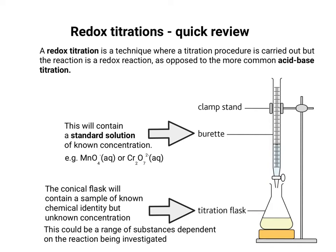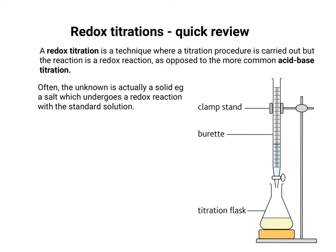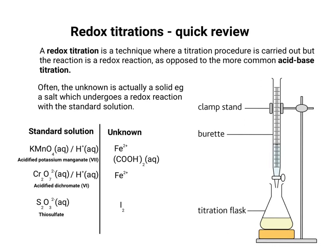The unknown could be a range of substances, depending on the reaction being investigated. In many cases the unknown is a solid that has to be dissolved to make a solution that can then be titrated. It could be a salt, for example, which undergoes a redox reaction with the oxidising agent in the standard solution.